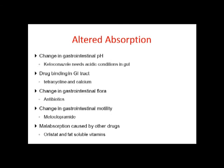Drugs with high first-pass metabolism include propranolol (beta blocker) and verapamil (calcium channel blocker) — requiring higher doses due to extensive hepatic extraction. Drugs with low first-pass metabolism include theophylline (phosphodiesterase inhibitor for bronchial asthma) and tolbutamide (anti-diabetic) — requiring careful dosing, as slight overdose can cause drug accumulation and toxic effects.